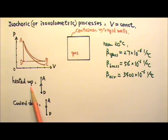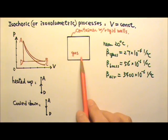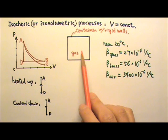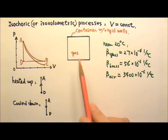If the gas is heated up, the pressure would increase, so it would be D to A. If the gas is cooled down, the pressure would decrease, and therefore it would be A to D.